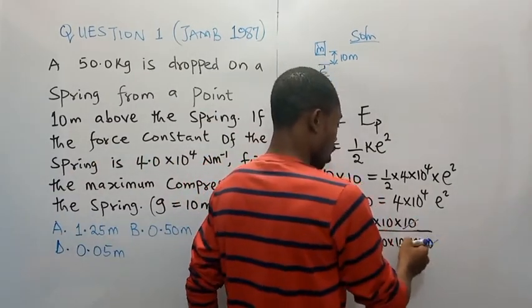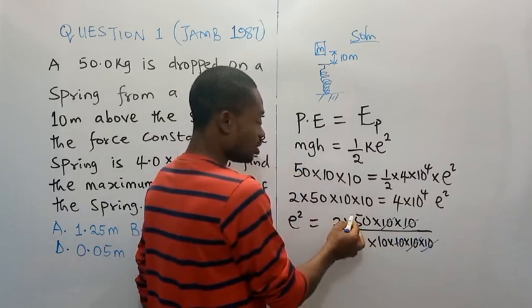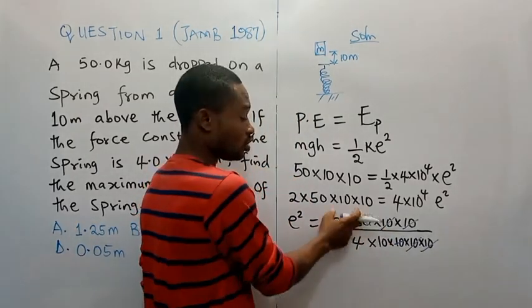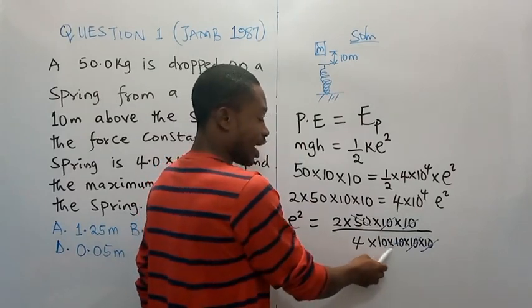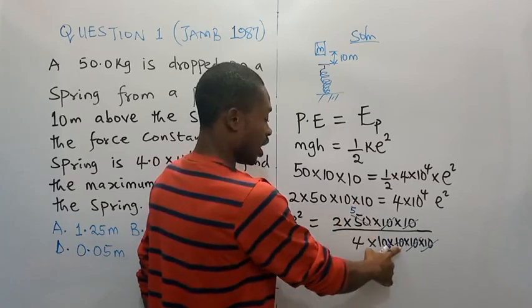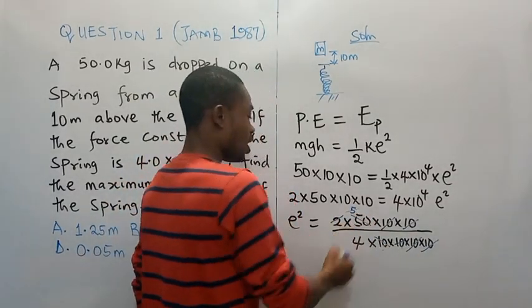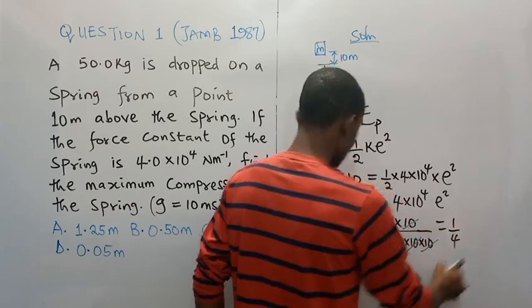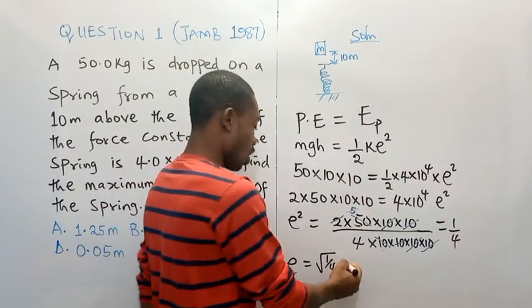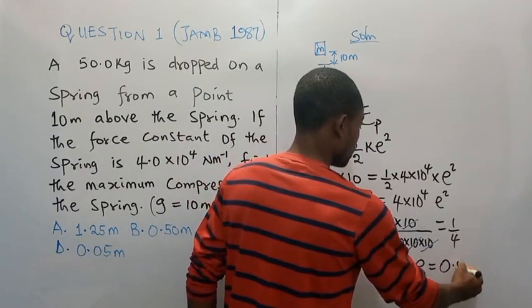From here, this 10 and this 10 will go off. This 10 and this 10 will go off. This 10 will cancel this 50, or I can simply say 2 times 50 will give you 100. That 100 will now be cancelled by this to 10. If 10 divides 50, you will get 5. Then 2 times 5 will give you 10. That 10 will now divide this. You are left with 1 over 4. So, to get our extension, it's going to be equal to square root 1 over 4, which will give us 1 over 2. In conclusion, the compression is giving us 0.5 meter.